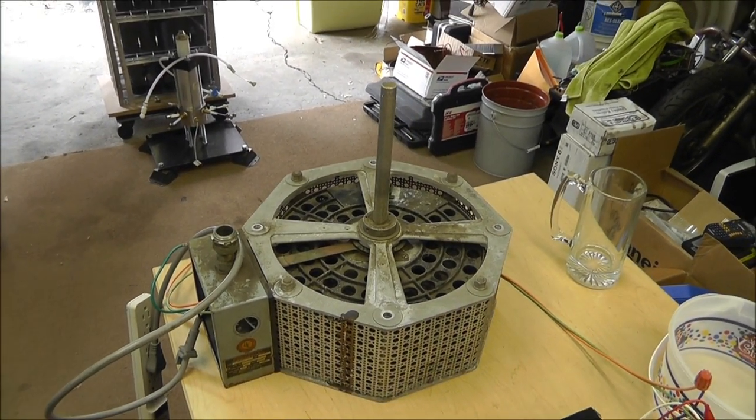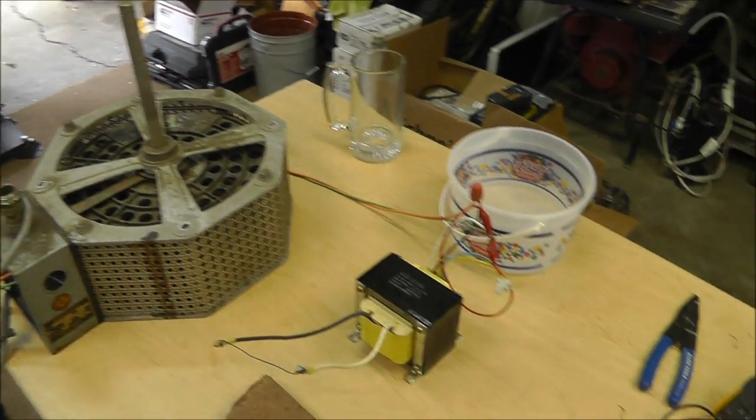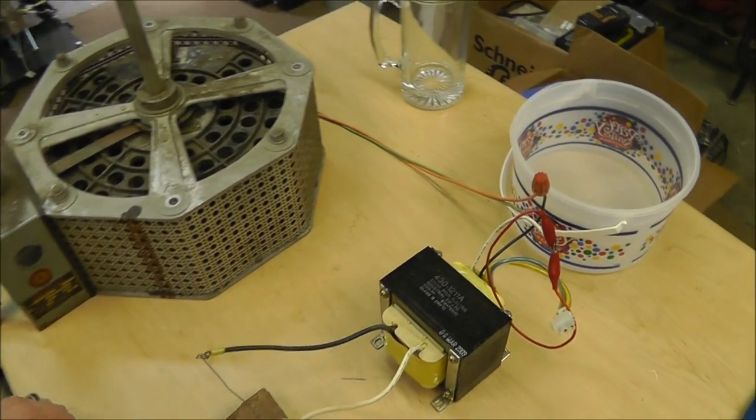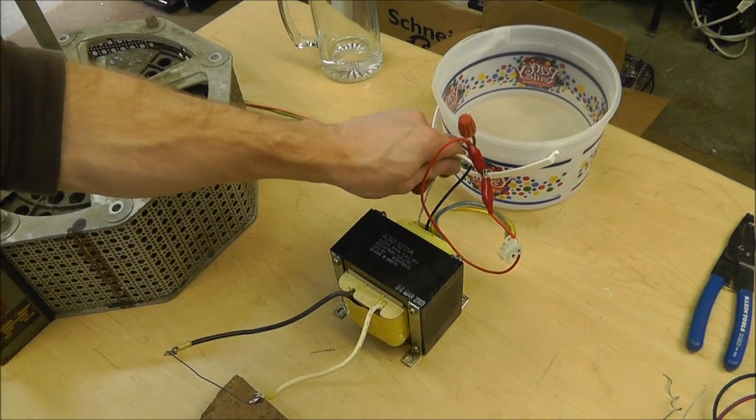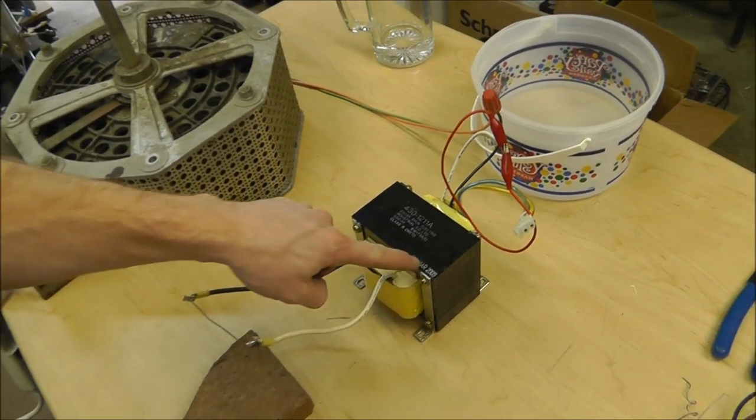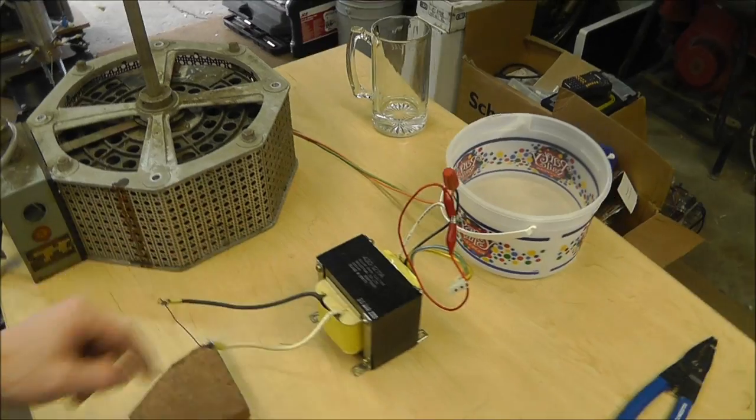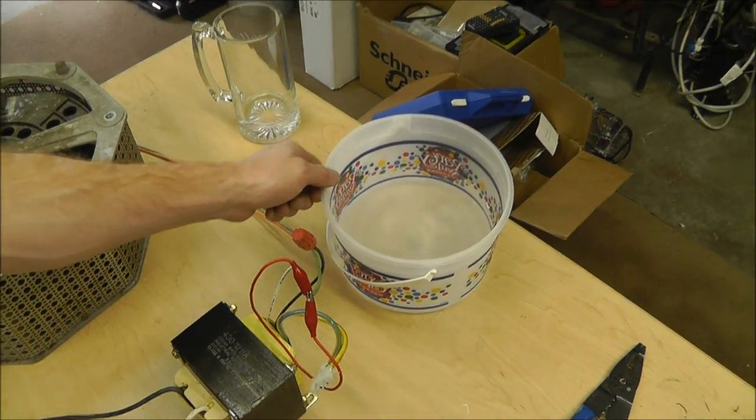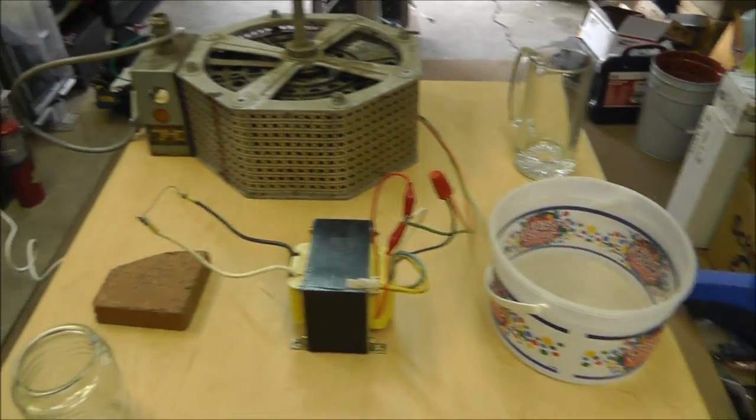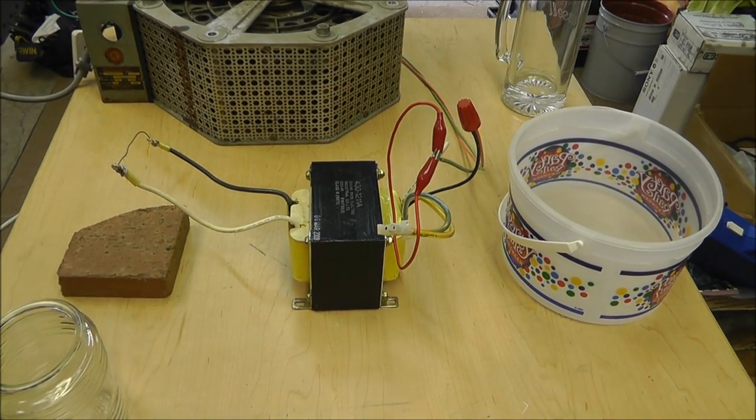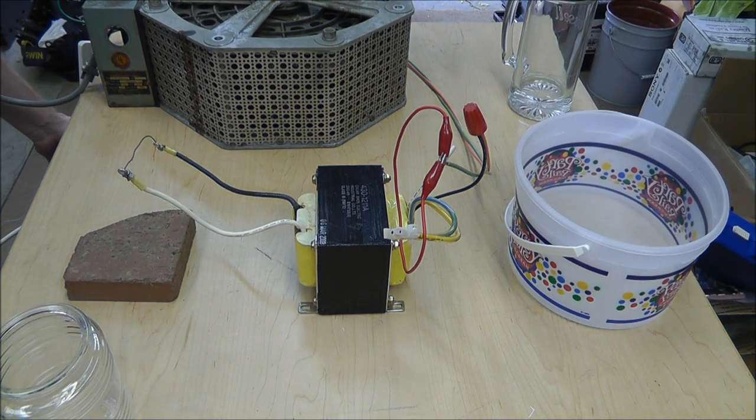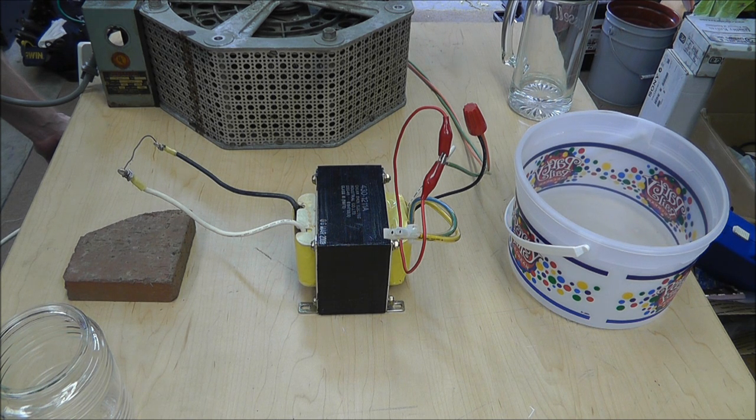Here's what I've got. I've got my Variac, my Monsterac, connected to this little transformer. This is a 24-volt output, 120-volt input. I have no idea the rating or anything like that. It came out of a UPS. I've got a little bucket of water here, and when I turn this on, this wire gets hot, as you'll see.